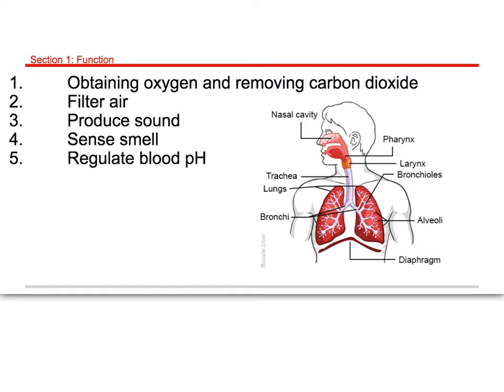The respiratory system also helps with our sense of smell. When you breathe in through your nose, the air has chemicals in it, and we have chemical receptors in the nose that connect right to the brain to help us perceive smell. A major function we'll spend time on later is how the system regulates blood pH. We like our blood to be around 7, which is neutral.